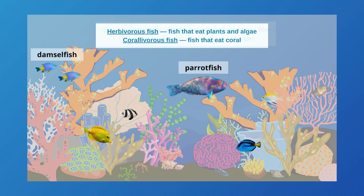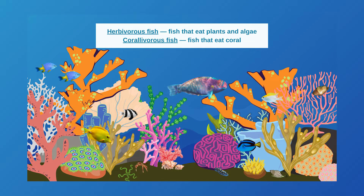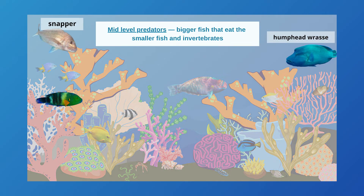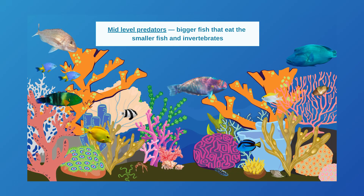Also attracted to the algae and coral are herbivorous fish, which eat plants, and corallivorous fish, which eat coral. These fish will eat the algae and coral, which helps maintain the structure of the reef. Then come the mid-level predators — the carnivorous fish that will eat the smaller animals. These carnivorous fish keep the herbivorous and corallivorous fish and invertebrates in check so they do not eat all the algae, coral, and sponges.